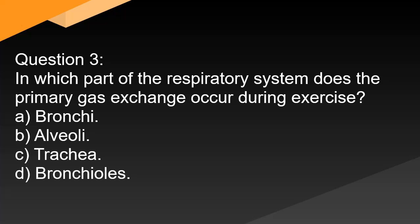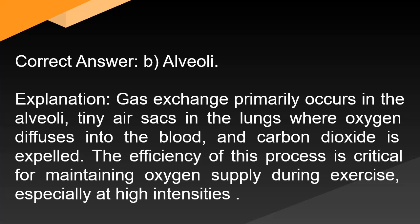Question 3: In which part of the respiratory system does the primary gas exchange occur during exercise? A. Bronchi. B. Alveoli. C. Trachea. D. Bronchioles. Correct answer: B. Alveoli. Gas exchange primarily occurs in the alveoli — tiny air sacs in the lungs — where oxygen diffuses into the blood and carbon dioxide is expelled. The efficiency of this process is critical for maintaining oxygen supply during exercise, especially at high intensities.